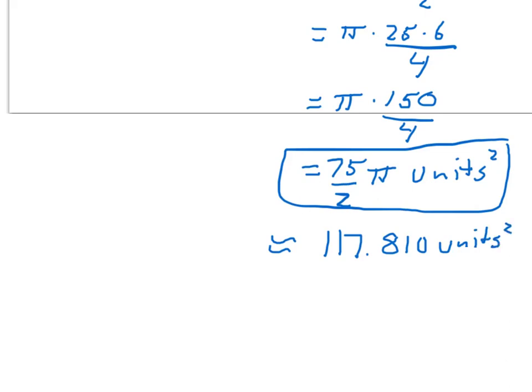Both of these answers are correct. It just depends on whether you were asked for an exact answer — which would be 75π/2 — or an approximate answer — which would be 117.810 square units.